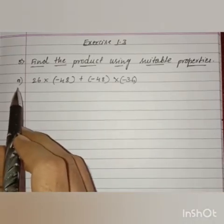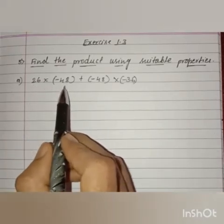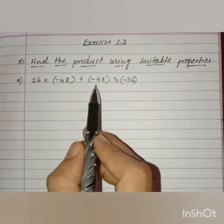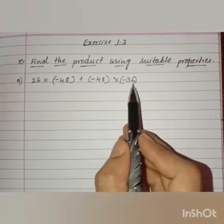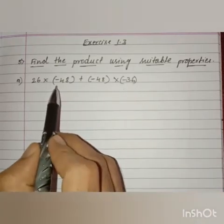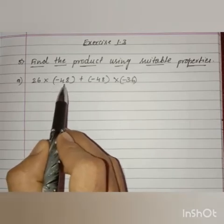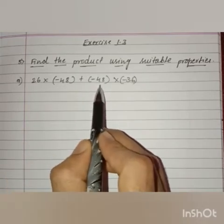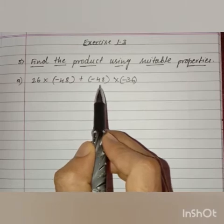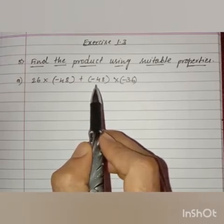Question number a: 26 into minus 48 plus of minus 48 into minus 36. Look here, in this expression, we have 48 is repeated. So, it means it is in the form of distributive property of multiplication over addition.